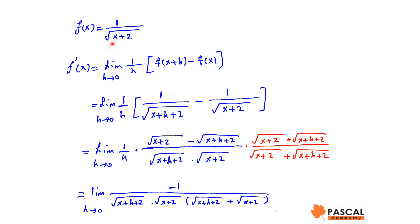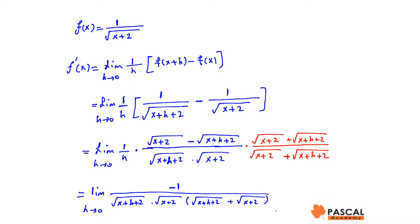Since the function is a fraction, to avoid having a complex fraction, we say f'(x) equals the limit of 1 over h times f(x+h) minus f(x) as h approaches 0. Note that 1 over h times f(x+h) minus f(x) is the same as f(x+h) minus f(x) over h.